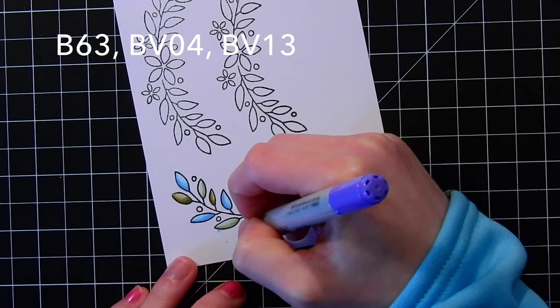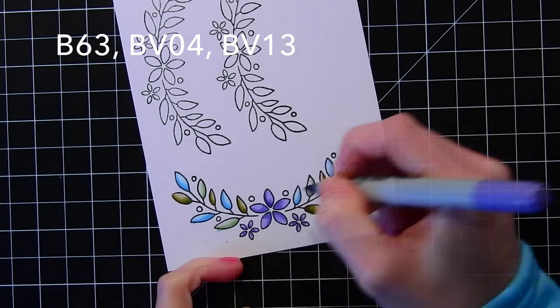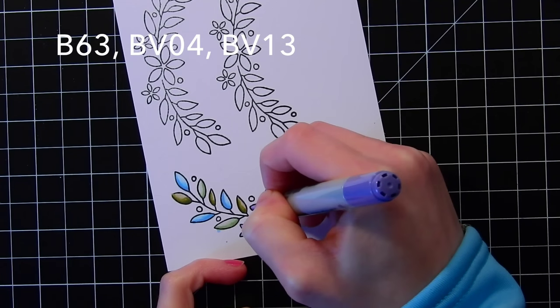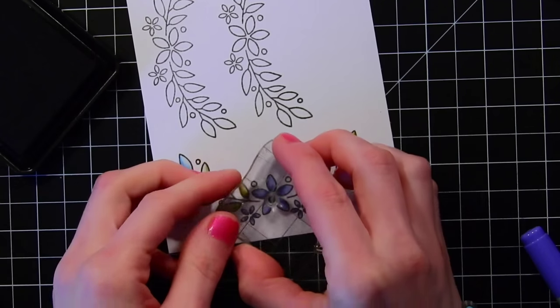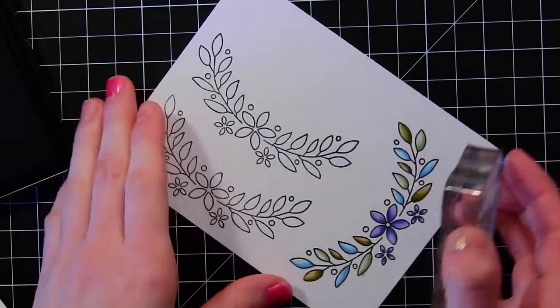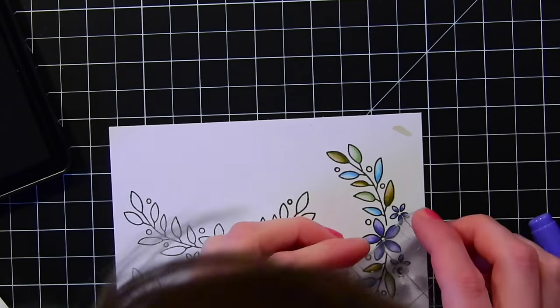But it adds a lot of dimension to the flowers when you do this three-step shading, which is basically a light tone, a mid-tone, and your darkest tone. And if you feather in the colors very carefully, you'll be able to fit them all into your face that you're coloring.